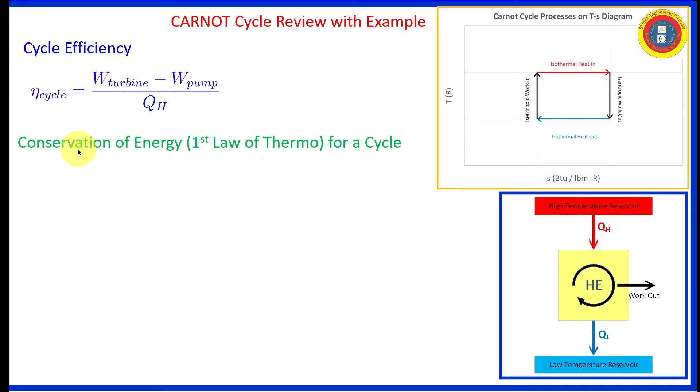Let's go ahead and simplify the numerator a little bit using conservation of energy for this cycle. We could say the heat in plus the work of the pump is equal to the work of the turbine plus the heat loss. Solve that for the net work, and it's equal to the difference in the heat in minus the heat out. So here's our equation for cycle efficiency. This is true for any heat engine. We have not done anything specific for a Carnot cycle. It's also going to be true for a Carnot cycle.